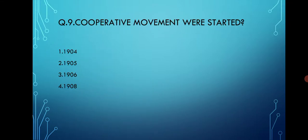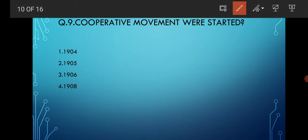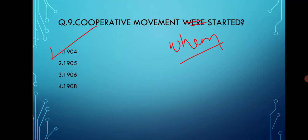When was the Cooperative Movement started? Options are 1904, 1905, 1906, and 1908. The correct option is option number one, that is 1904.